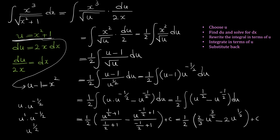Substituting back with u equals x² + 1, the final answer is 1/2 times [2/3 times (x² + 1) to the power of 3/2 minus 2 times (x² + 1) to the power of 1/2] plus c. I hope you enjoyed this video and learned how to integrate with the u-substitution method. If you liked this video, please subscribe to my channel, and see you in my other videos.